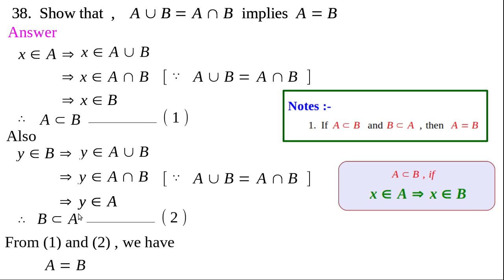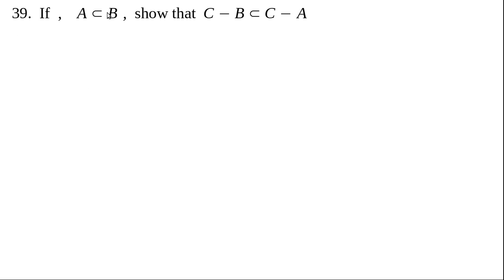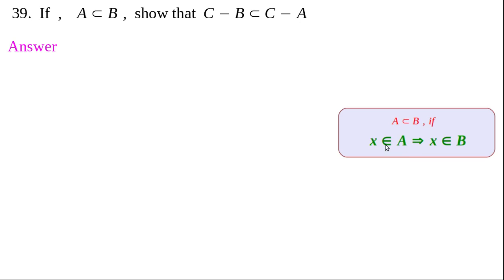Question 38 is done. Now question 39: If A⊂B, show that C−B ⊂ C−A. To prove C−B ⊂ C−A, we need to show that whenever x∈C−B, then x∈C−A also. Let us take x∈C−B. What is the meaning of x∈C−B? It means x∈C and x∉B.